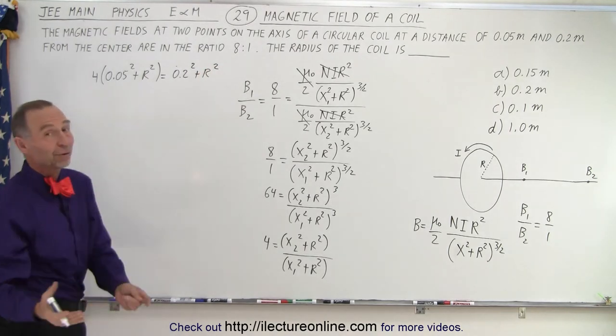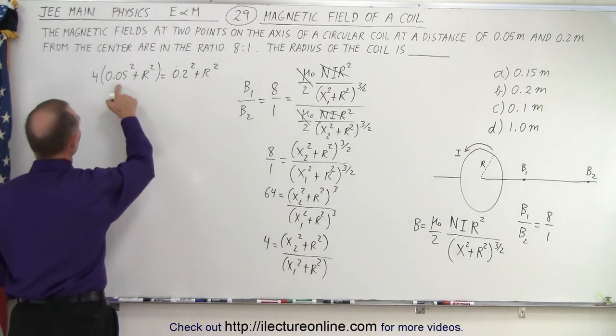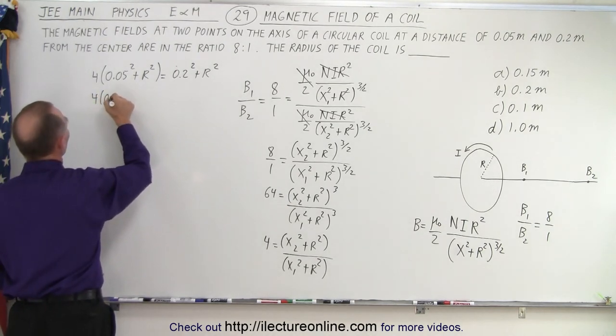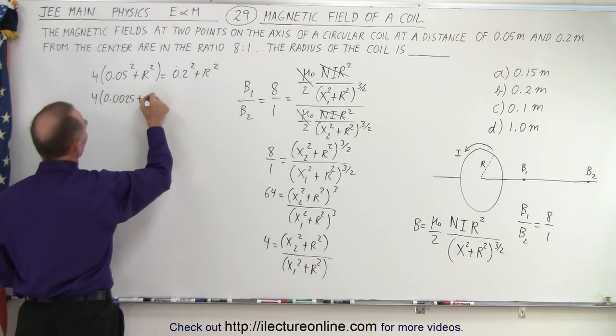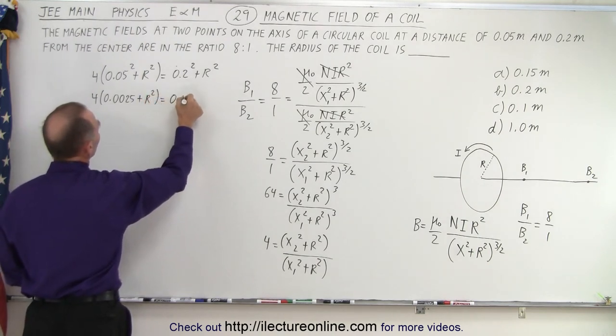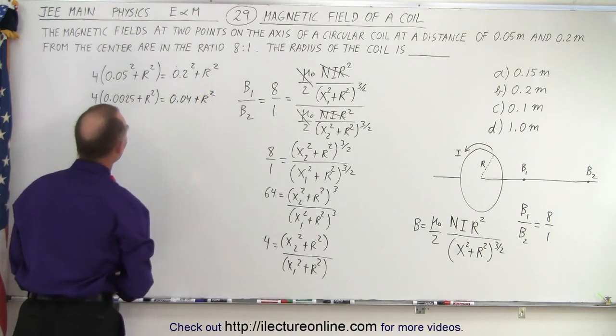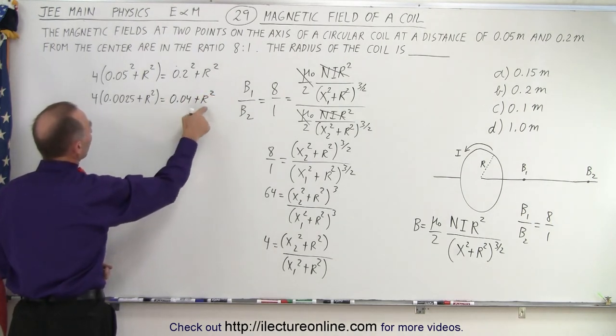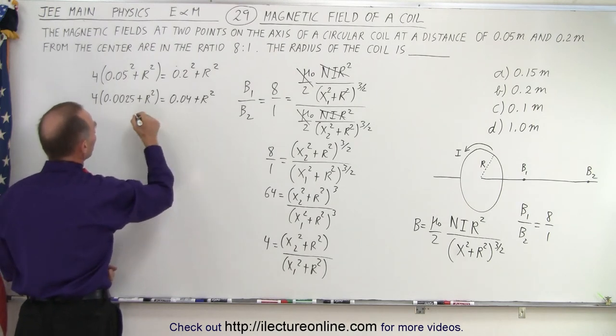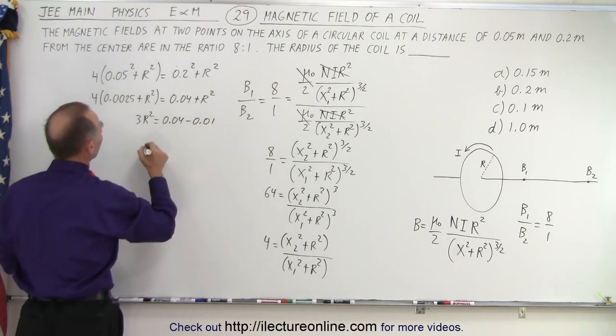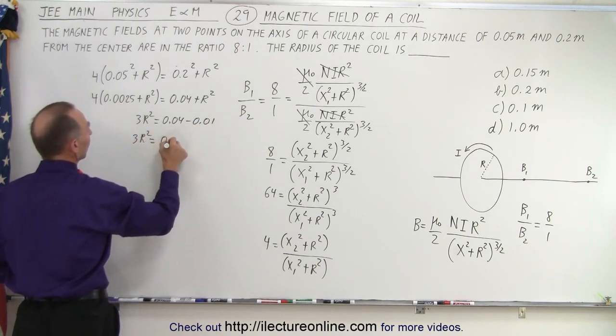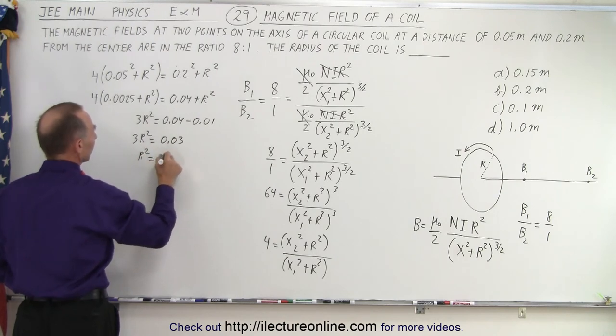Okay now all we have to do here is solve for r algebraically. This would be equal to 4 times 0.05 squared, 0.01, so 0.04 plus r squared is equal to 0.04 plus r squared. So we have 4 r squared minus r squared, that becomes 3 r squared is equal to 0.04. So 3 r squared is equal to 0.03, r squared is equal to 0.01 and r therefore is equal to 0.1.